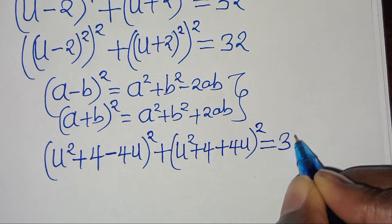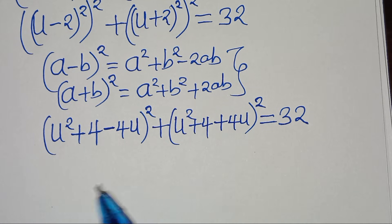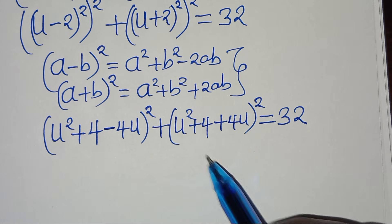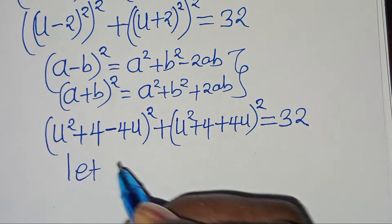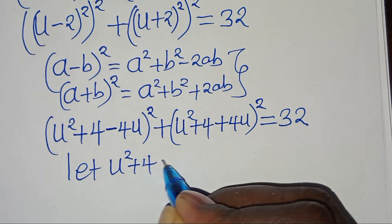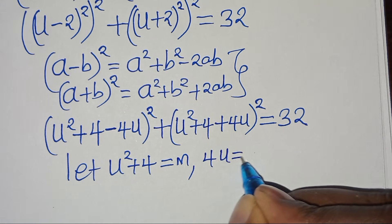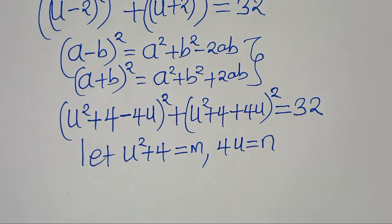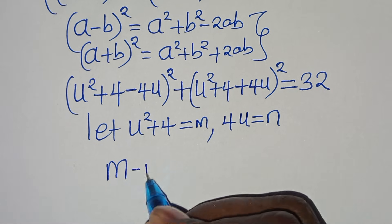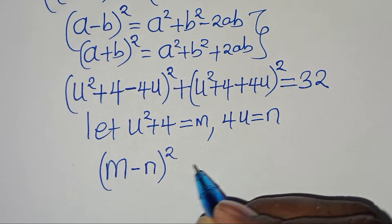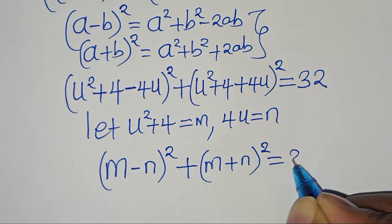This is equal to 32. Now we have u² + 4 appearing in both terms and 4u appearing in both terms. So we can let u² + 4 be equal to m, and let 4u be equal to n. Substituting m and n, we have (m minus n)² plus (m plus n)² equals 32.